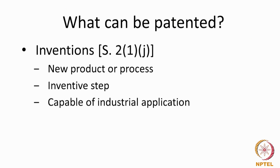Inventions under the act can be granted for a new product or a process. The invention should involve an inventive step and be capable of industrial application. This is the definition of invention mentioned in section 2.1 of the Patents Act. For anything to be an invention: it must be new — referred to as the novelty requirement; it should involve an inventive step, also called the non-obviousness requirement; and it should be capable of industrial application, largely called the utility requirement.